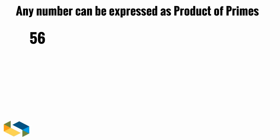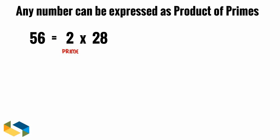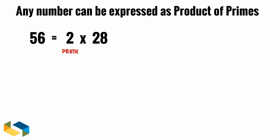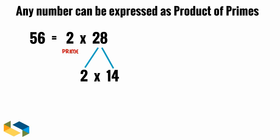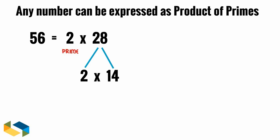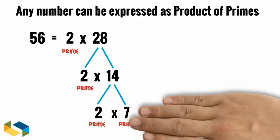Let's look at a number, say 56. It can be expressed as a product of any two factors. Say 2 times 28. Now 2 is a prime number. 28 isn't. Now 28 can be expressed as 2 times 14. We get another 2 as prime number here. And 14 is 2 times 7. And both 2 and 7 are prime numbers.